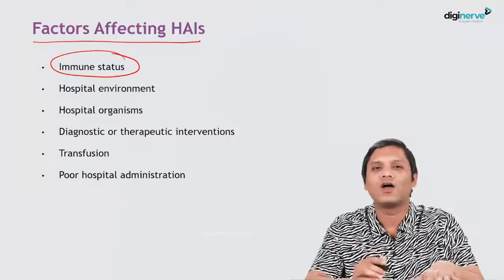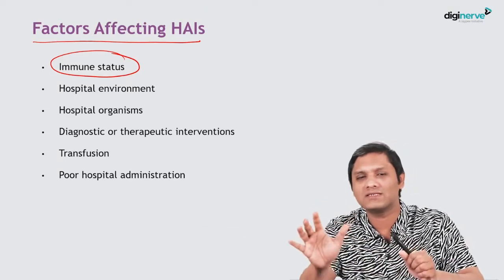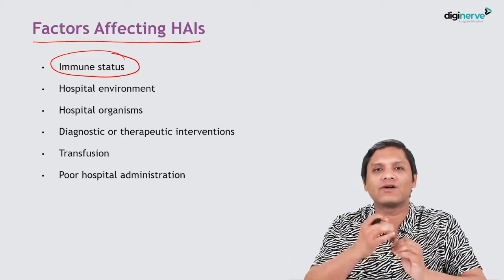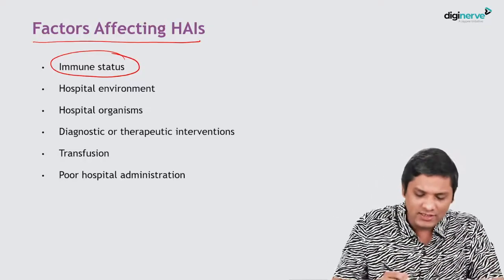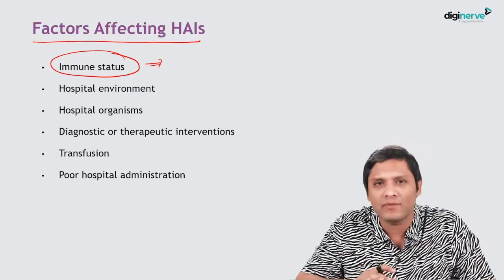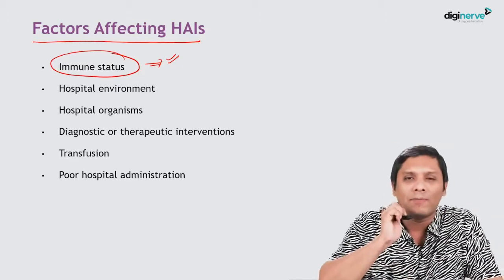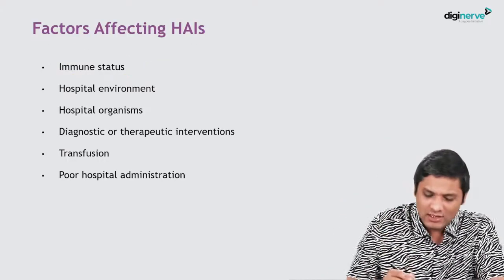Now we will see what various factors influence the occurrence of HAI. The first is the immune status of the patient. Healthcare workers are present in the hospital environment and are exposed to the same organisms as patients — so why do patients acquire the organisms and develop HAI but not healthcare workers? The answer is that patients are immunologically compromised but not the healthcare workers. Any reason causing compromised host immunity is a predisposing factor for HAI. That is why patients have a hundred-fold higher risk of acquiring HAI than healthcare workers.